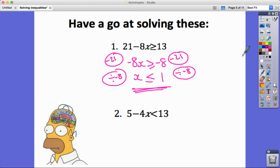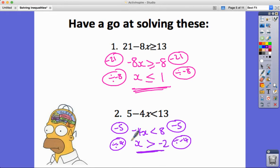In this next one, my first step might be to subtract 5, so I get minus 4x less than 8. Now I'm in that position again where I have to divide by a negative number. I'm going to be dividing by minus 4 in this case to get the x term on its own, so I get x. 8 divided by minus 4 is negative 2, and I'm going to flip this inequality sign, so x greater than minus 2.